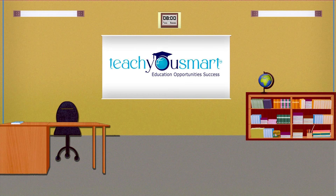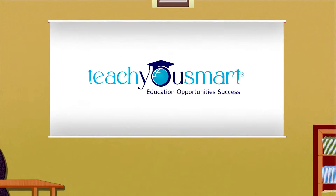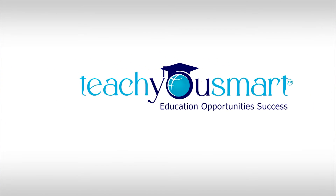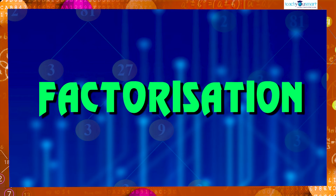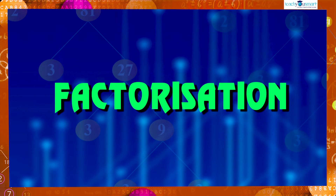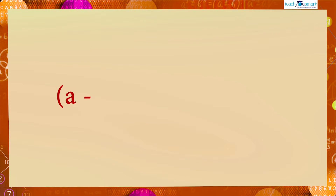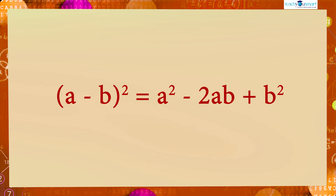Hello students, welcome to Teach You Smart. Let's continue our journey through factorization. Today we are going to see how the identity (a minus b) whole square equals a squared minus 2ab plus b squared is applicable to factorize an algebraic expression.